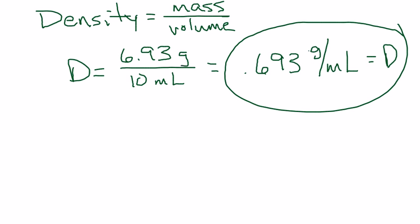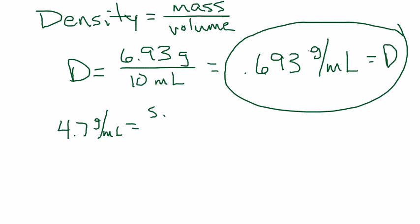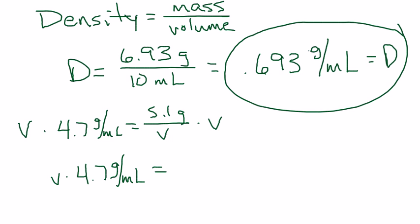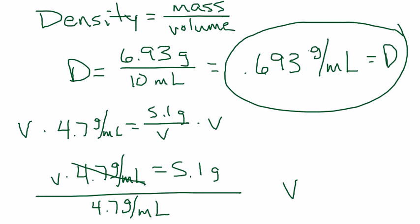For the second one, we don't know our volume. Our mass is 5.1 grams, and our density is 4.7 grams per milliliter. That equals 5.1 grams over V. To do this one, we're going to have to multiply by V on both sides, and that's going to give us V times 4.7 grams per milliliter equals 5.1 grams. And then we're going to divide by 4.7 grams per milliliter on both sides. Here, this will cancel, so we'll be left with V on the left side equals 5.1 divided by 4.7, and I get 1.09 with some rounding. And then our units there, grams and grams, so our units there should be milliliters, and that makes sense because it's a volume.